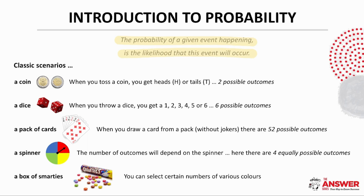What about a spinner? This will depend on the specific spinner. The one we have here has four equally possible outcomes illustrated by the four colors used. And finally, it is always fun to talk probability with all the different color smarties. It's worth noting that for all these examples, we assume no bias or uneven weighting.